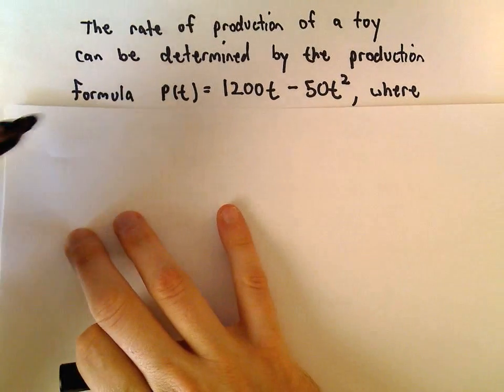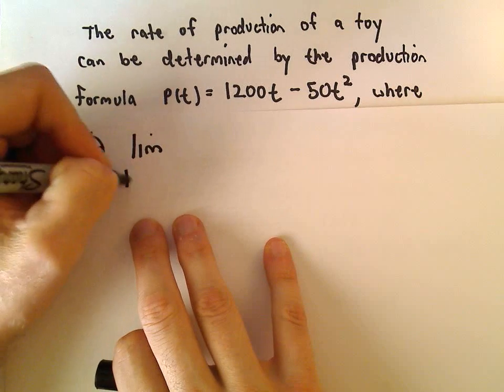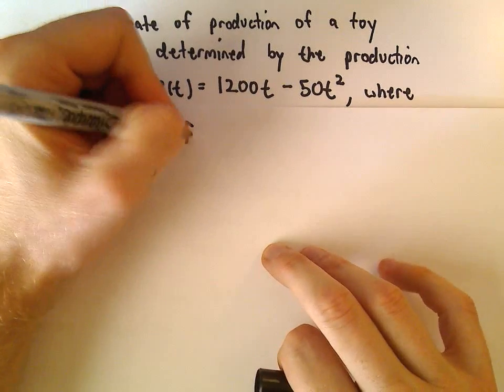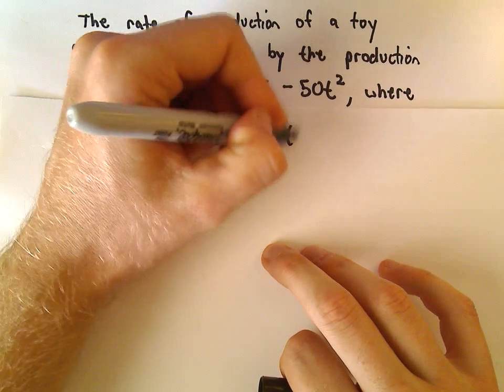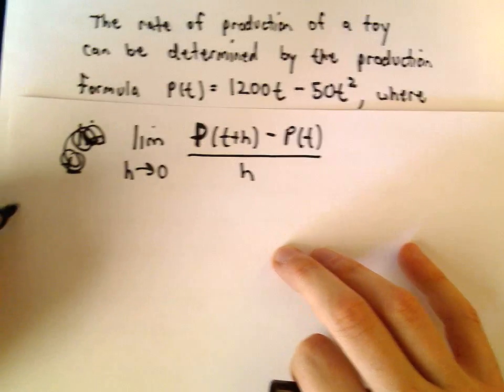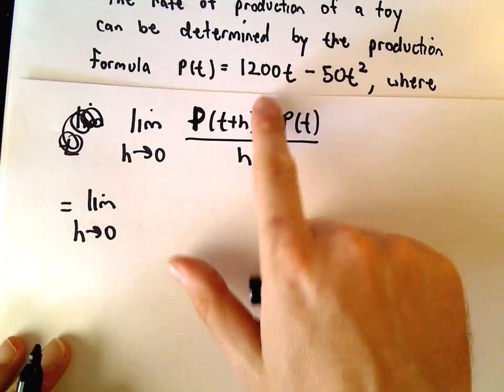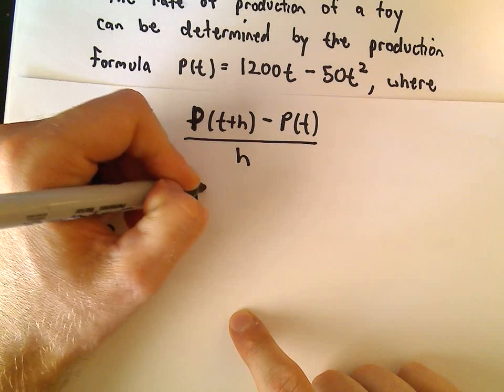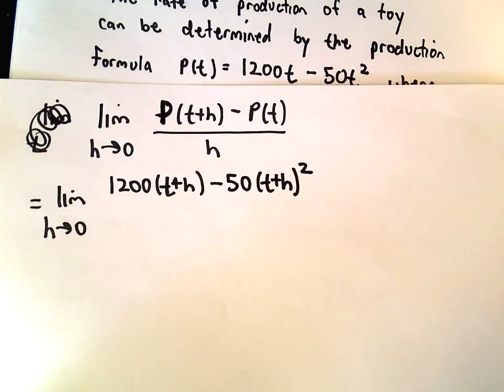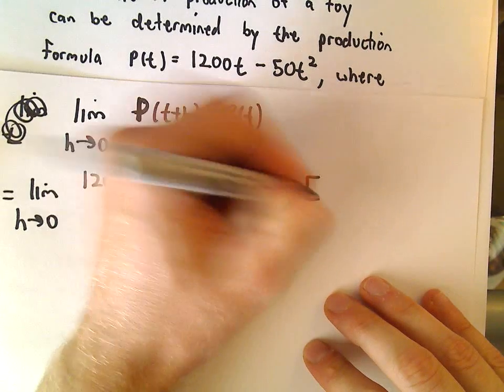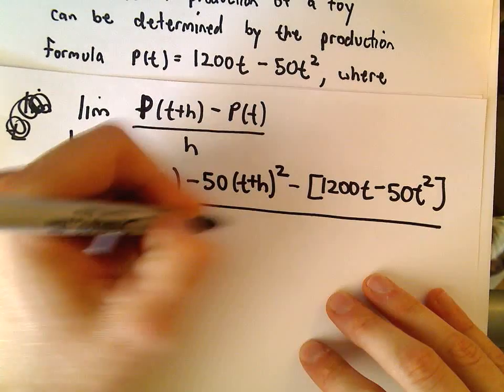We're simply going to take the derivative of this function using our limit definition. We'll do the limit as h approaches 0. We'll do our function—in this case, normally we write f, but since we've named our function P, we'll do P(t+h) - P(t) all over h. Let's start plugging some stuff in there, limit as h approaches 0. Everywhere that there's a t, I'm just going to plug in t+h. So we'll have 1200(t+h) - 50(t+h)² and then from that we'll subtract away the original function 1200t - 50t². That's all being divided by h.